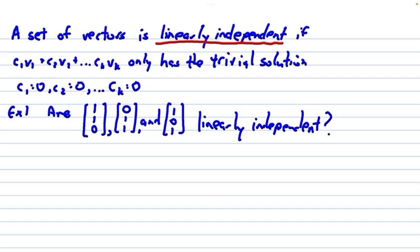A set of vectors is linearly independent if c₁v₁ plus c₂v₂ all the way up to cₖvₖ, however many that may be,